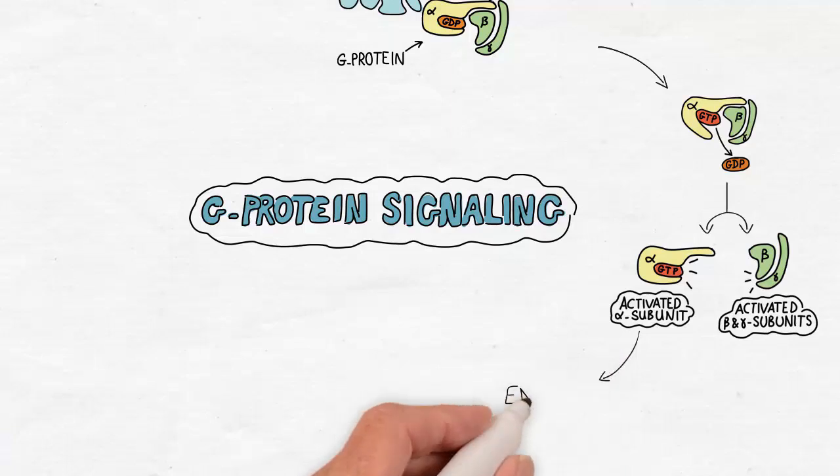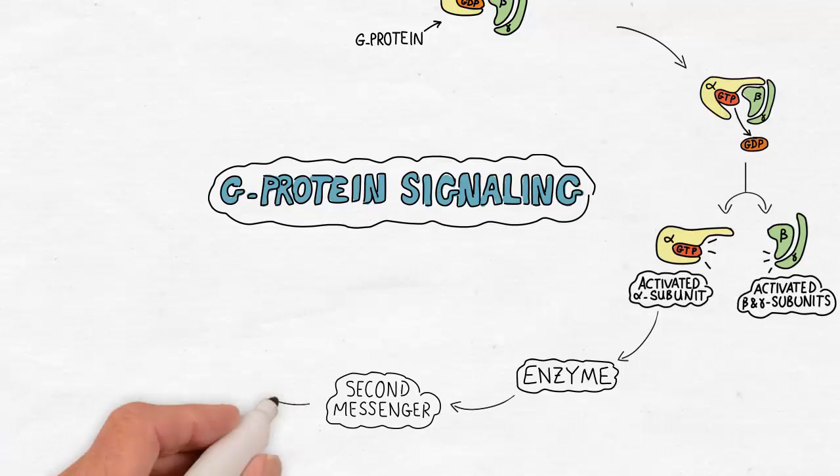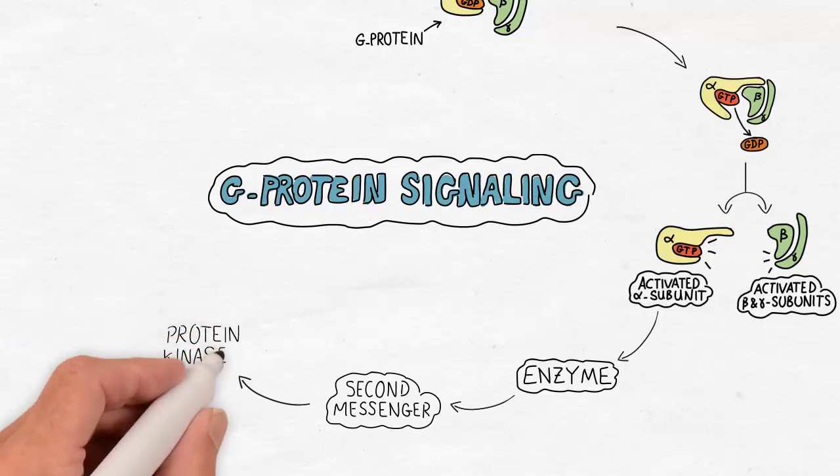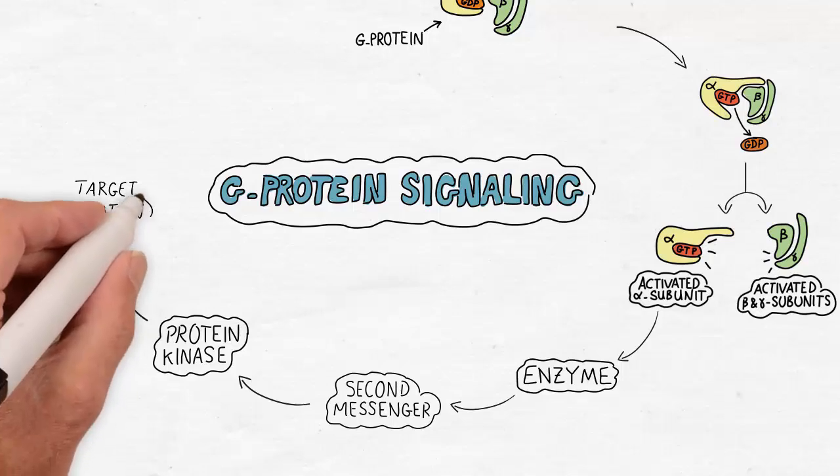The activated alpha subunit then regulates an enzyme that is membrane bound. This enzyme catalyzes a reaction that produces a second messenger. This second messenger acts like an amplifier to the first signal sent to the cell by the ligand and this occurs in many cases by activation of protein kinases, which are enzymes that phosphorylate certain target proteins, many of which are enzymes too.